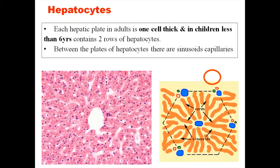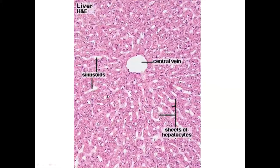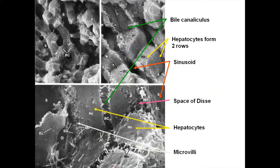Each hepatic plate in adults is one cell thick; in children under six years of age, usually two rows of hepatocytes may be present. In between the plates we have sinusoidal capillaries or sinusoids. In the electron microscopic view, bile canaliculi can be seen running between hepatocyte rows. On the surface toward the sinusoid, microvilli are beautifully visible, and toward the canaliculi they also have microvilli.